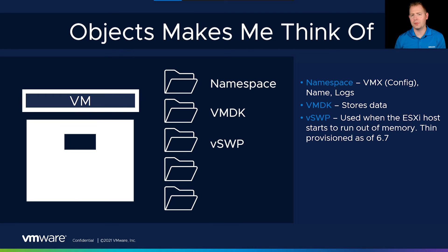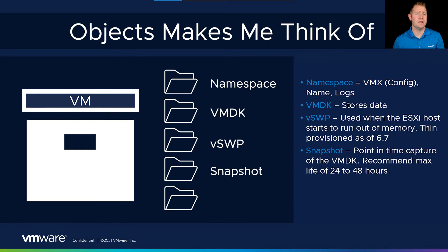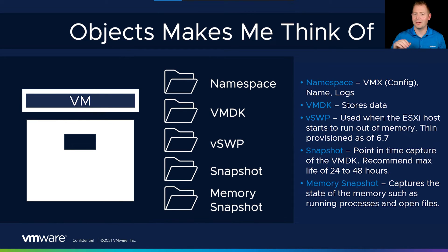Our fourth and fifth objects are snapshot related. The fourth is a snapshot of our VMDK — let's say we just finished installing the OS, installing an application, or doing some customization. We could take a snapshot of that VMDK in case we needed to roll back if there was an issue. Our fifth object is a memory snapshot. If we were to roll back that VMDK, how does the OS know what files are open and what processes are running? That's where the memory snapshot comes into play by capturing the contents of memory, which it can then provide back to our OS. If we don't have it, not a big deal — the VM will just do a reboot and come up fresh.